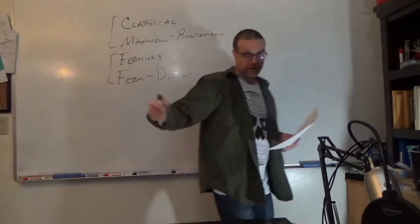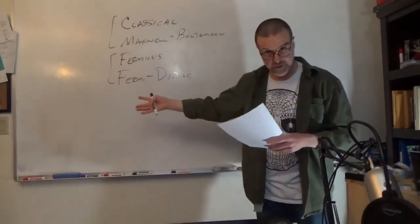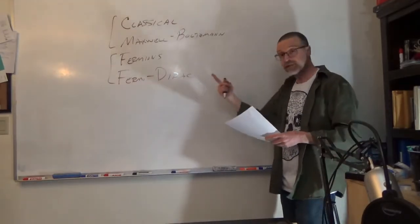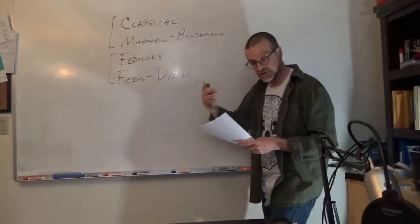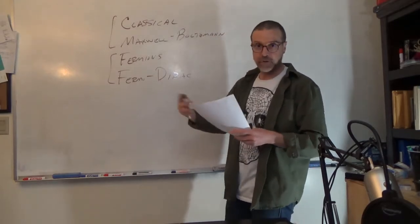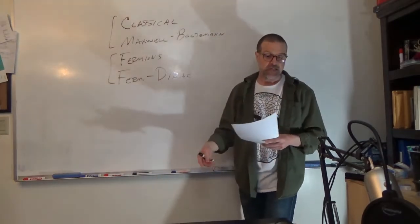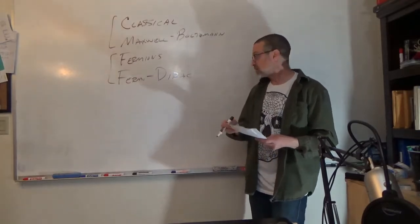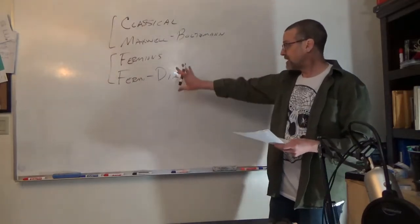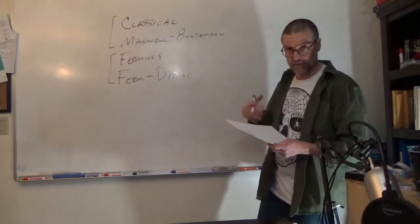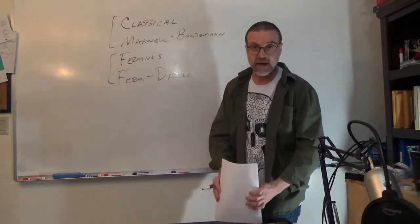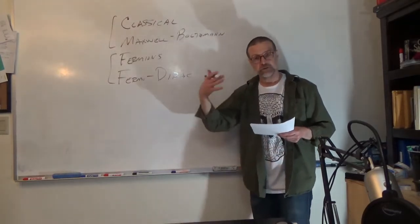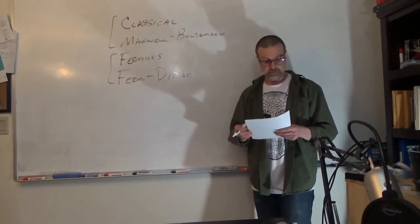Fermions are the case in which we have a totally antisymmetrized wave function. In the case of a totally symmetric wave function — a boson — we use Bose-Einstein statistics. But we're not going to talk about that, because it really is the fermions that yield the electronic properties and are important for understanding bonding.